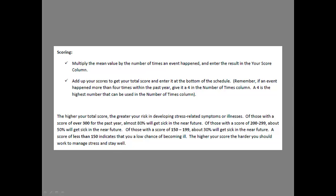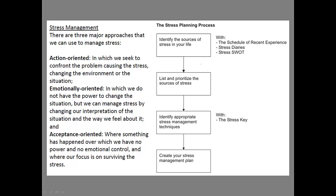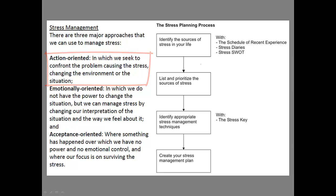The higher your score, the harder you should work to manage the stress. Now we want to talk about managing stress, and there are three primary ways we're going to discuss. Action-oriented means we seek to confront the problem causing the stress and change the environment or the situation.